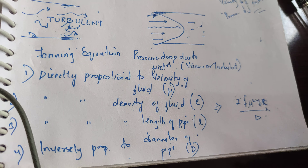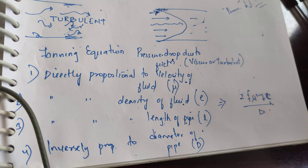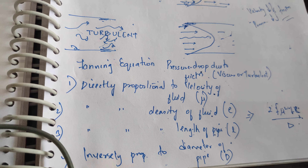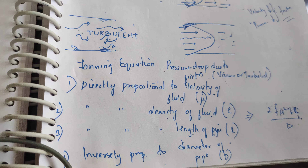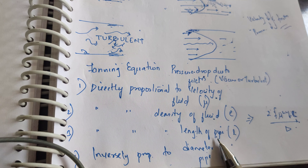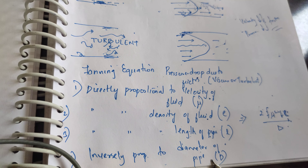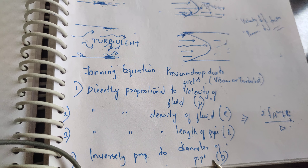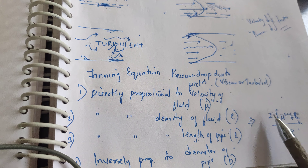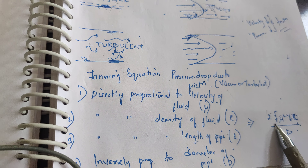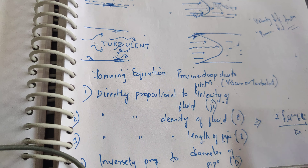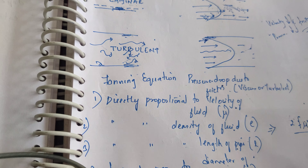In the Fanning equation — 2f·u²·L·ρ / d — u is the velocity, ρ is the density, L is the length of the pipe, d is the diameter, and f is the frictional factor.